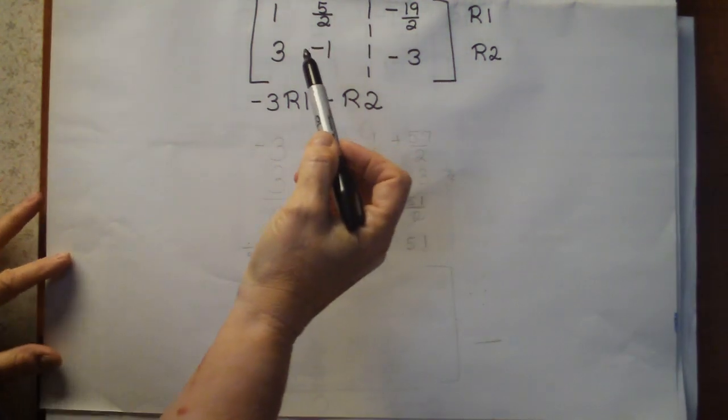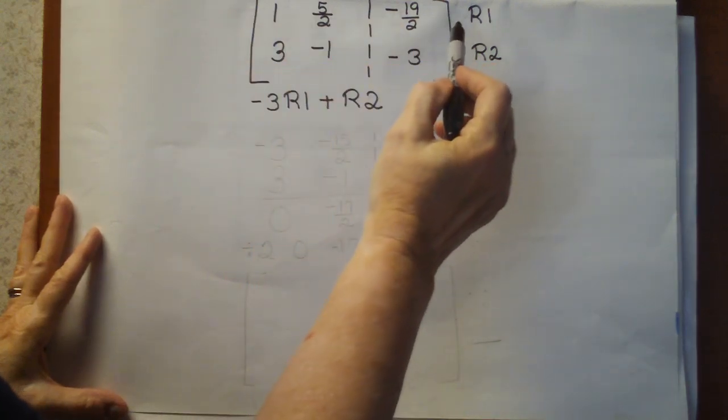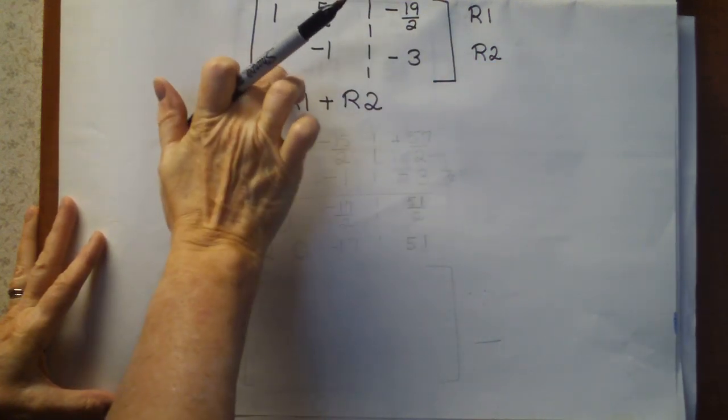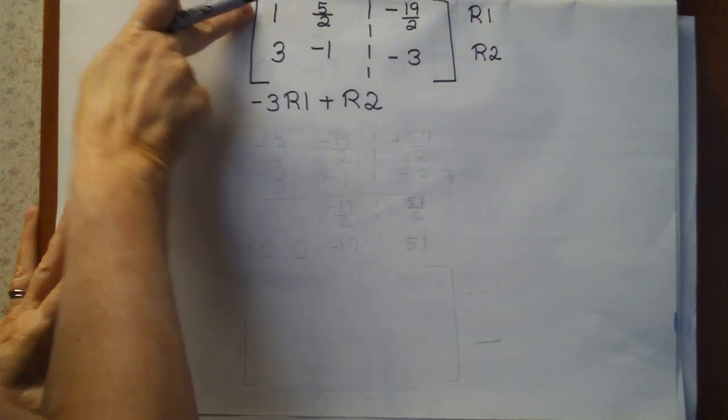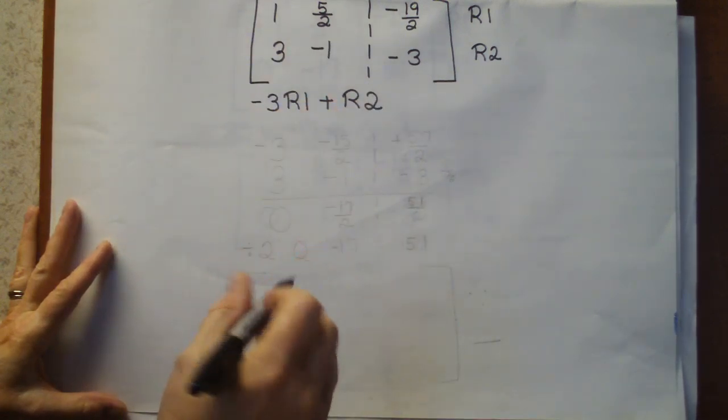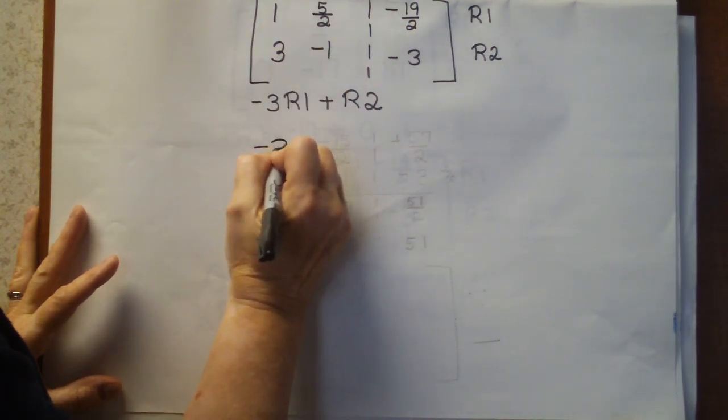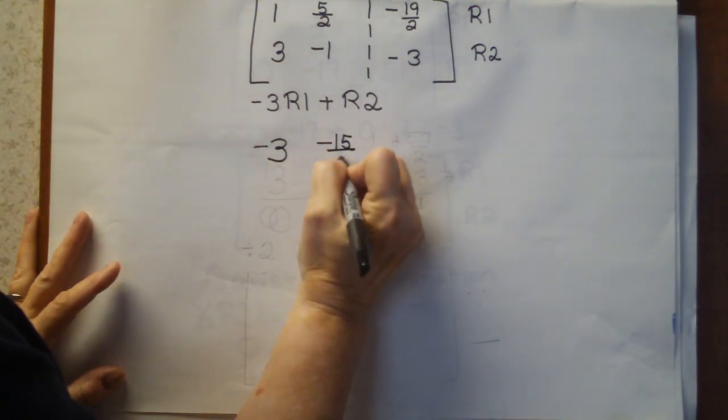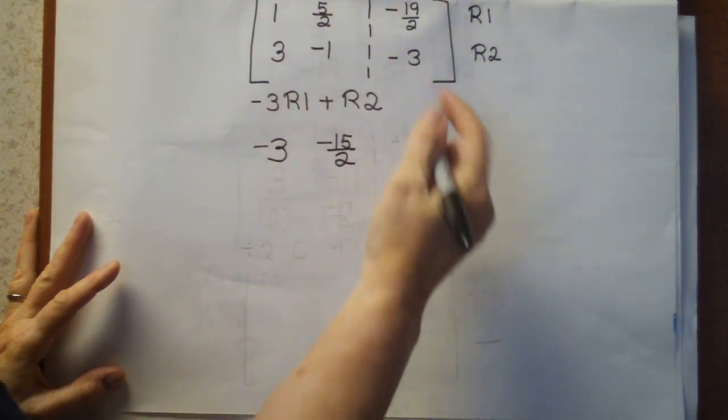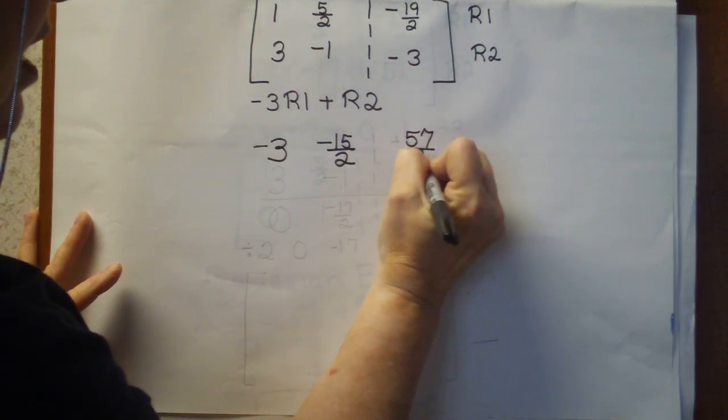In order to get the 0, I'm going to also use properties of equations. I can multiply through this equation by negative 3, the opposite of that, and then add this row to it. So I'm multiplying row 1 by negative 3, and then I'm going to add row 2. And here's the result. Negative 3 times 1 is negative 3. Negative 3 times 5 halves will be negative 15 halves. And negative 3 times negative 19 halves will be positive 57 halves.